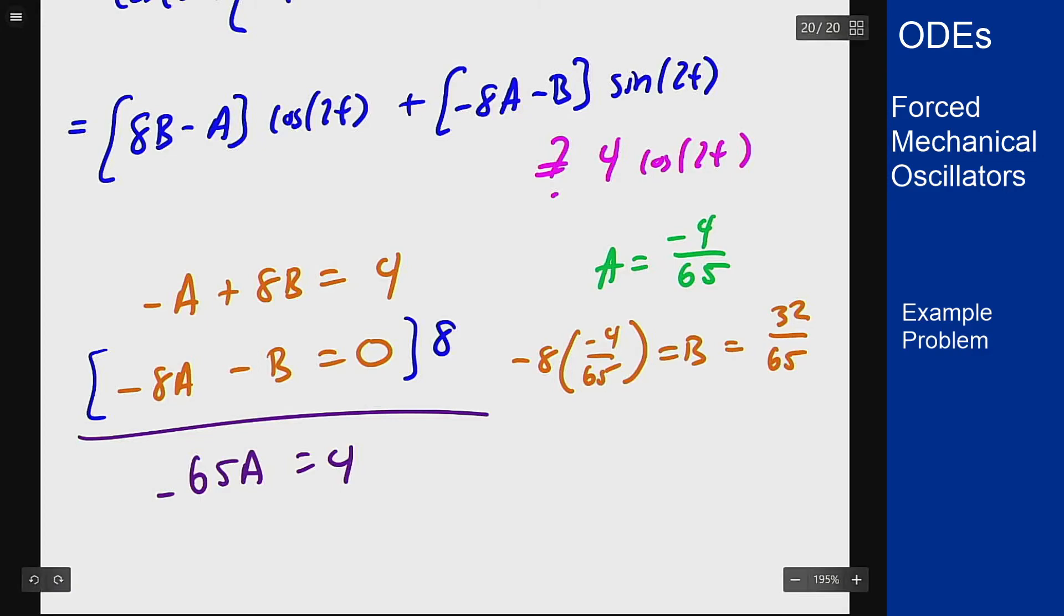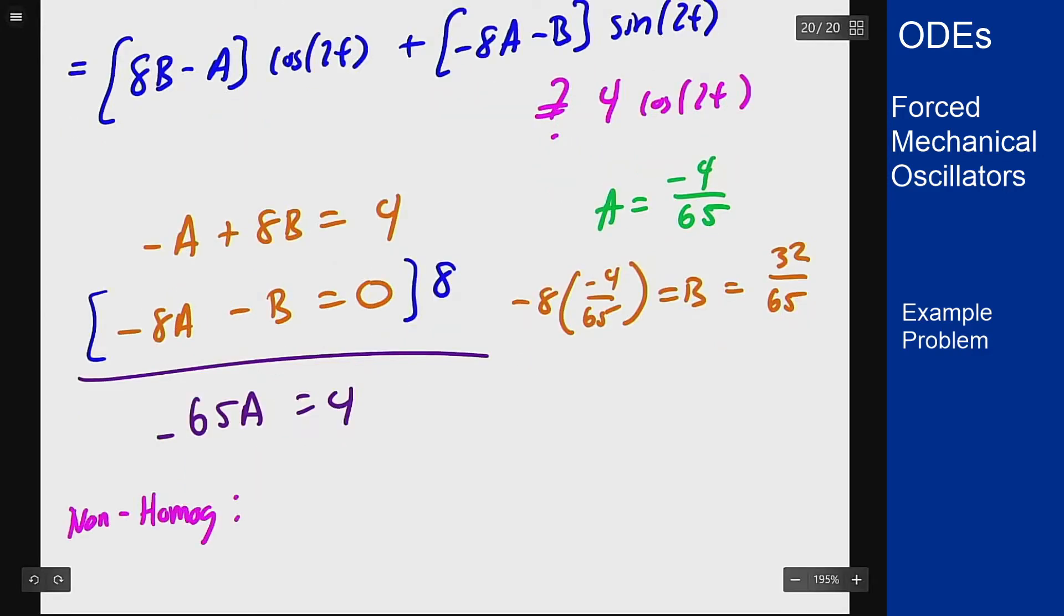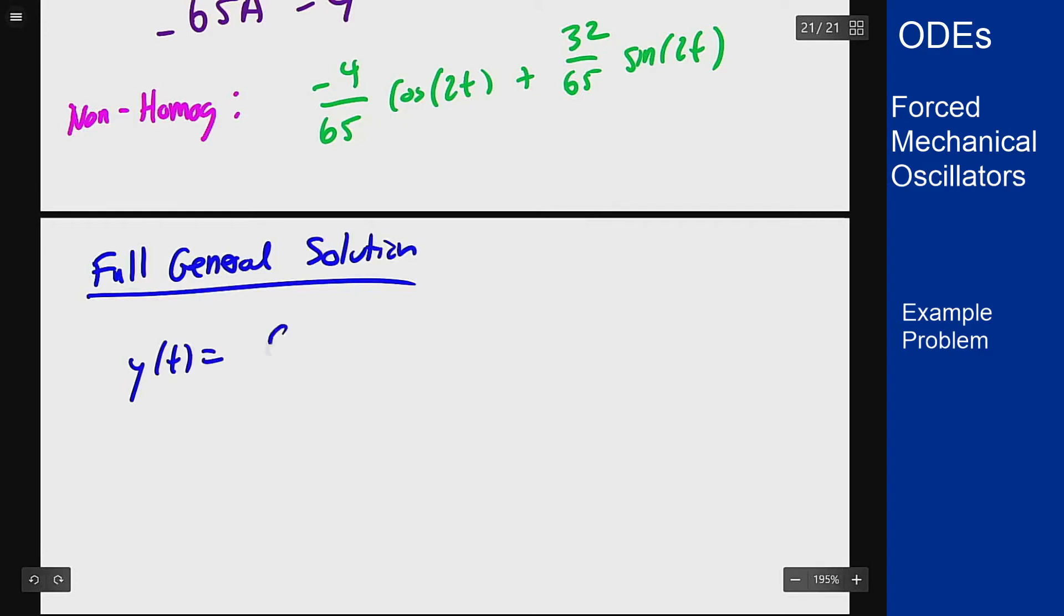So my non-homogeneous solution is negative 4 over 65 cosine of 2t plus 32 over 65 sine of 2t. We can then combine this with the solution to the homogeneous equation to give the general solution to the entire problem, which is c1 e to the minus t plus c2 e to the minus 3t minus 4 over 65 cosine of 2t plus 32 over 65 sine of 2t.